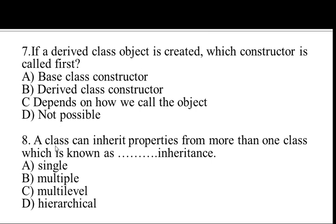Next question. A class can inherit properties from more than one class, which is known as dash inheritance. The types of inheritance include: single — where a child class inherits from one base; multiple — where a class inherits from more than one class; multi-level — grandparent, parent, child sequence; and hierarchical — one base class with more than one derived class. So the answer is B, multiple inheritance.